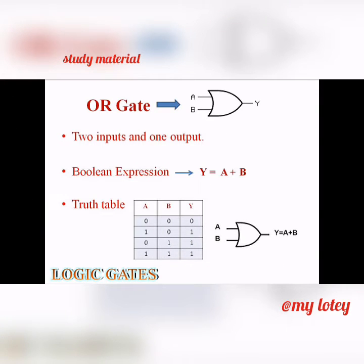Let's start with OR gate. You can see the symbol of OR gate. From the figure it is clear that the OR gate has two inputs and one output. From the boolean expression it is clear that y is equal to A plus B. It means the output can be obtained by adding the two input values. In the truth table, you can see the different output values obtained in the OR gate. When we give 0 input to A and 0 input to B, then the resultant obtained is 0 by adding the two input values. In the same way we can get some other output values as shown in the truth table.